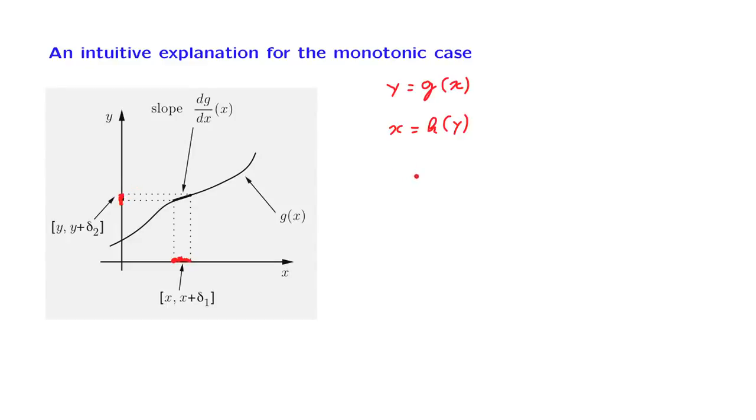So these two events have the same probability. And we can therefore write that the probability that y falls in this interval is the same as the probability that x falls in the corresponding little interval on the x-axis. This interval has a certain length delta_1. This interval has a certain length delta_2.